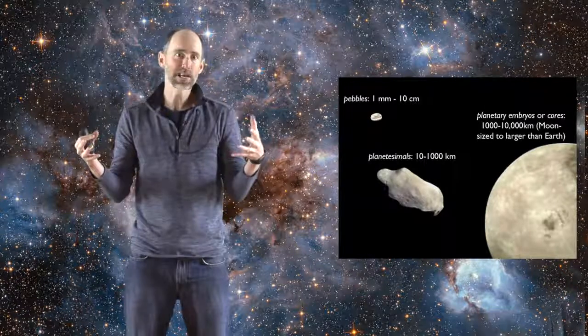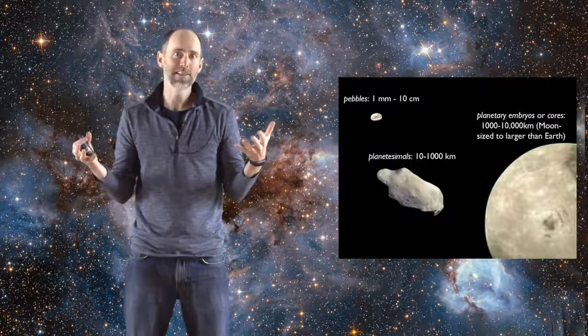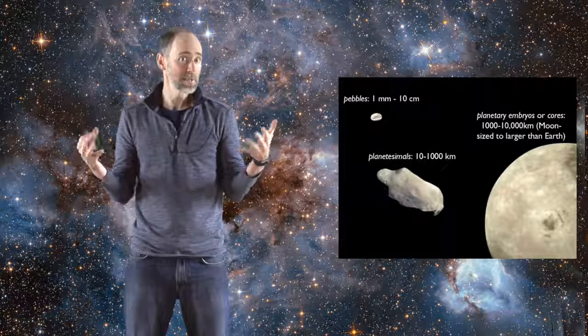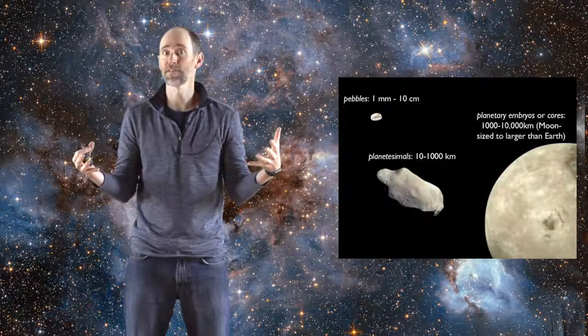Planetesimals are larger. They're kind of potato-shaped asteroid-like things that you think of from Star Wars. Typically their sizes are between 10 and 1,000 kilometers.